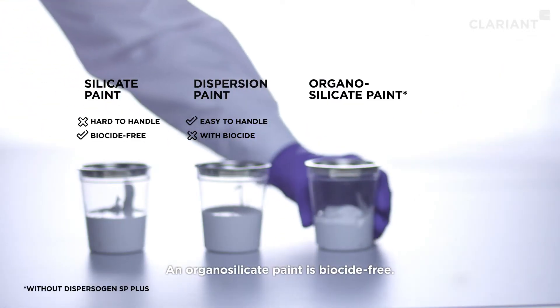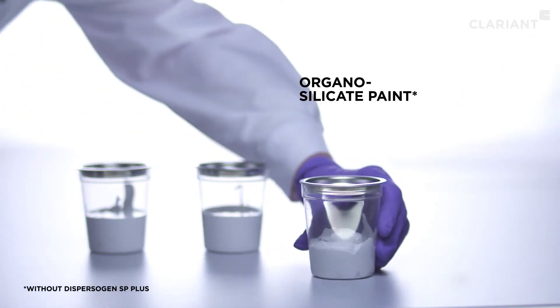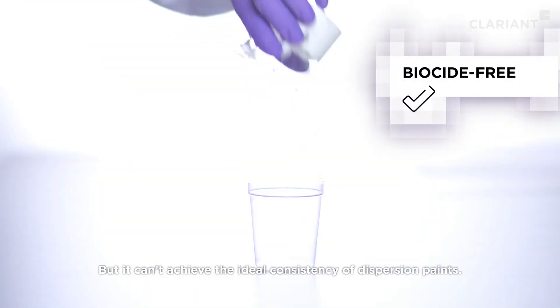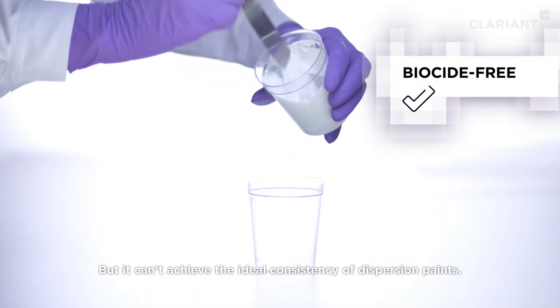An organosilicate paint is biocide-free, but it can't achieve the ideal consistency of dispersion paints.